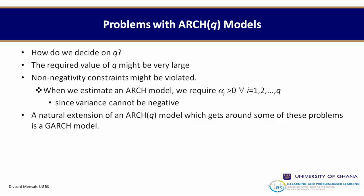There is an assumption on the alphas: alpha_0 and alpha_1 must be non-negative numbers, so the non-negativity constraint might sometimes be violated in ARCH models. When estimating an ARCH model, we require that alpha_i (both alpha_0 the constant and alpha_1 the coefficient) are all greater than zero, for i running from 1 to q, since variance cannot be negative.